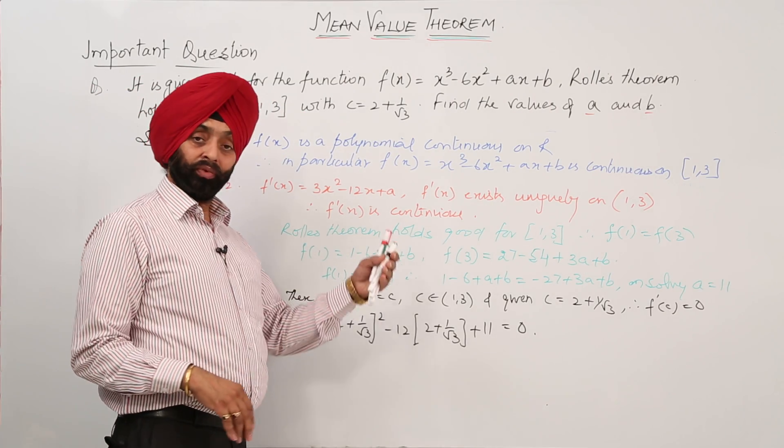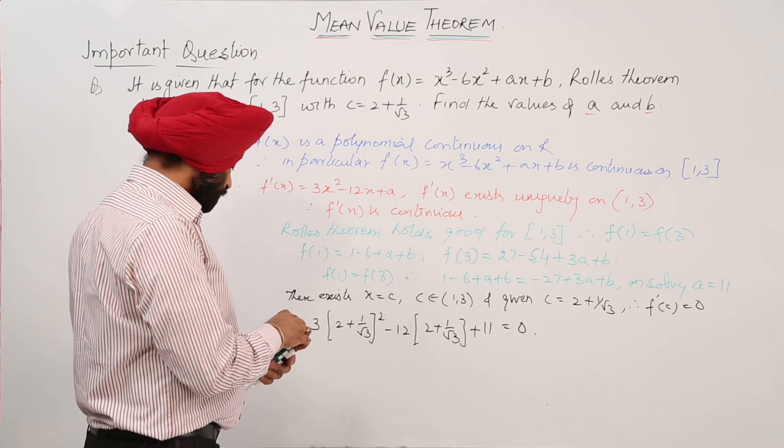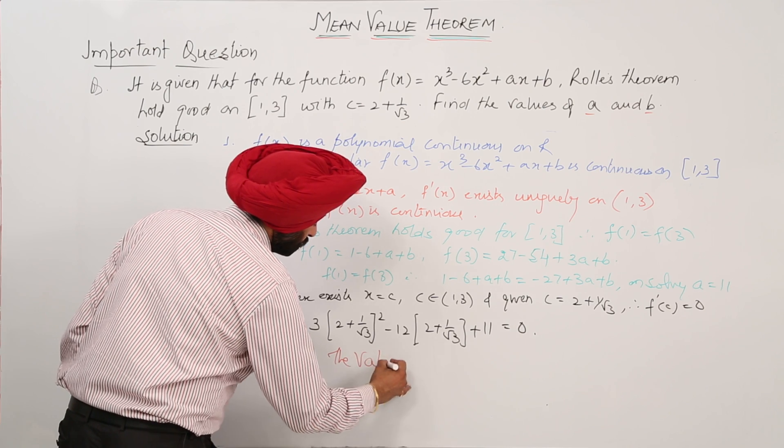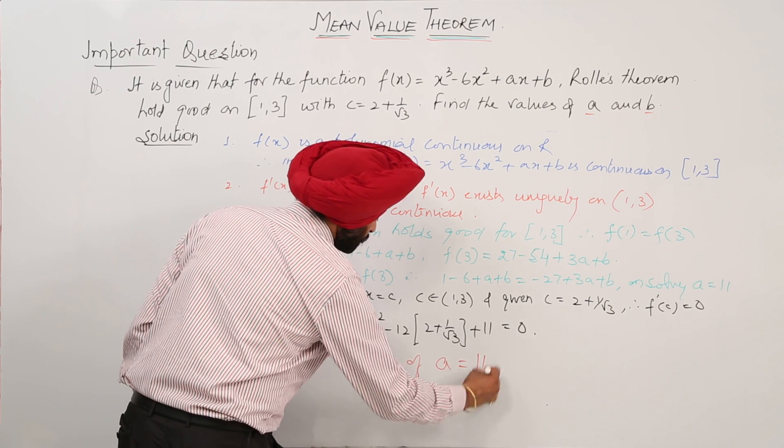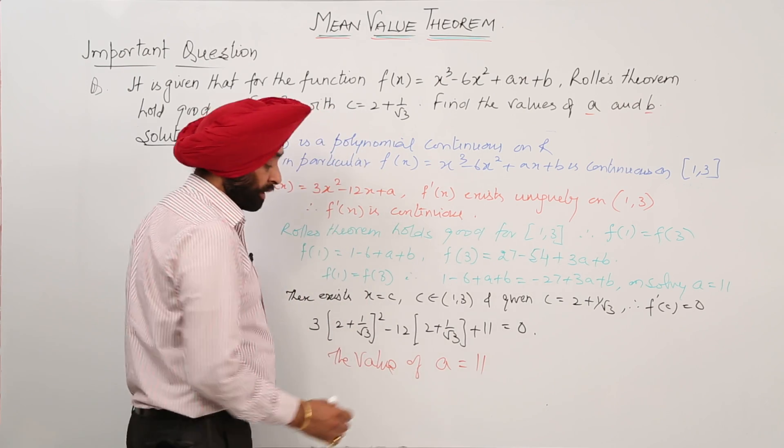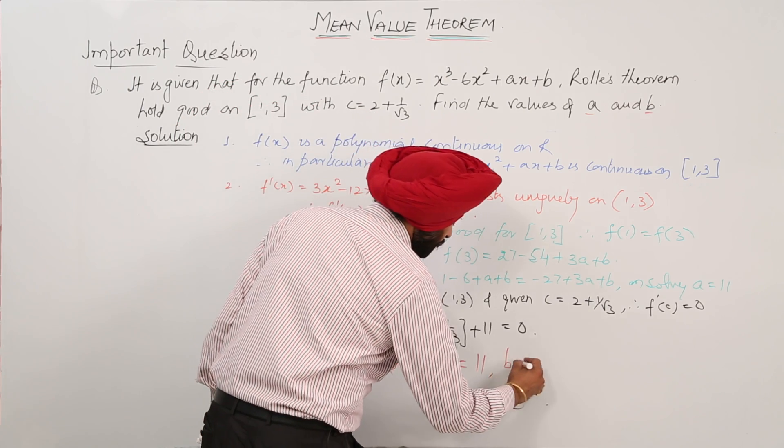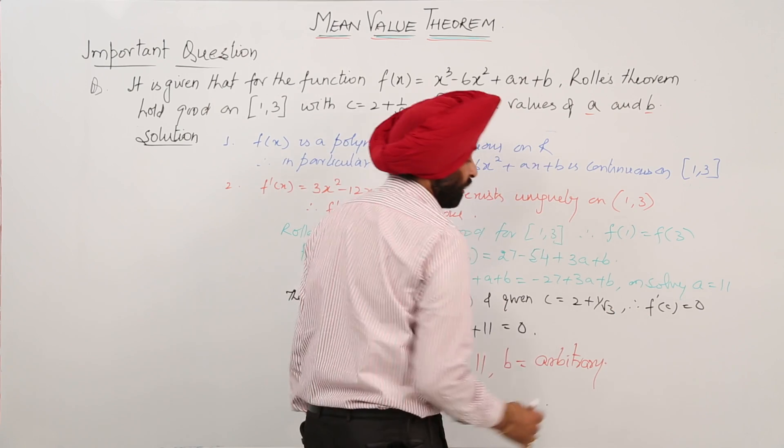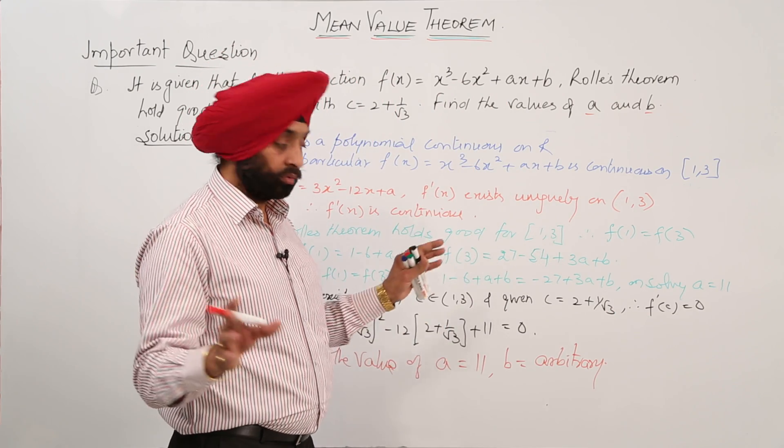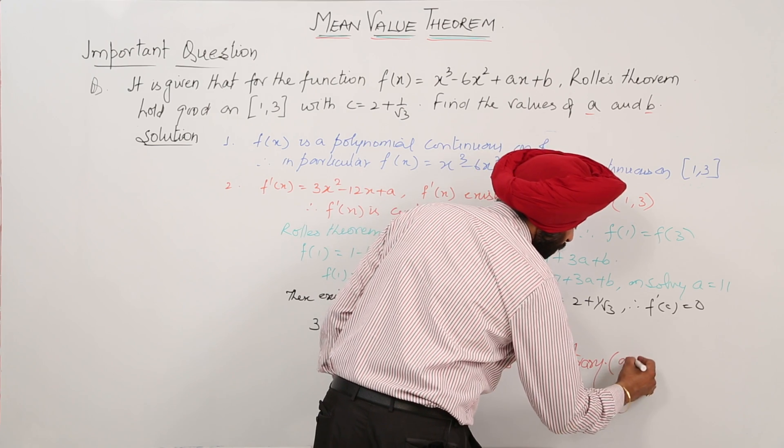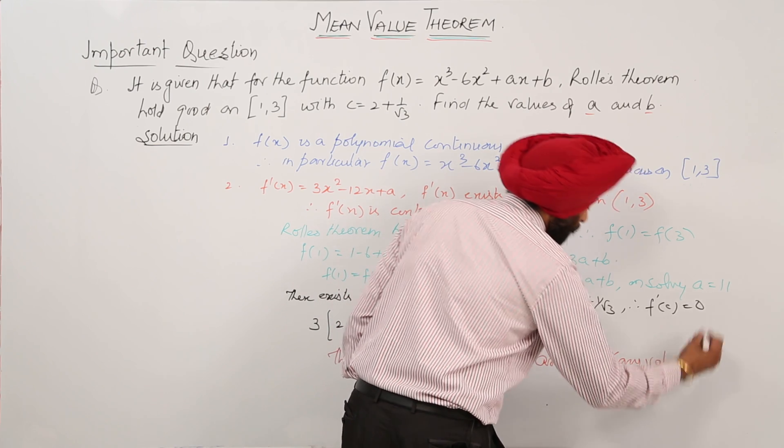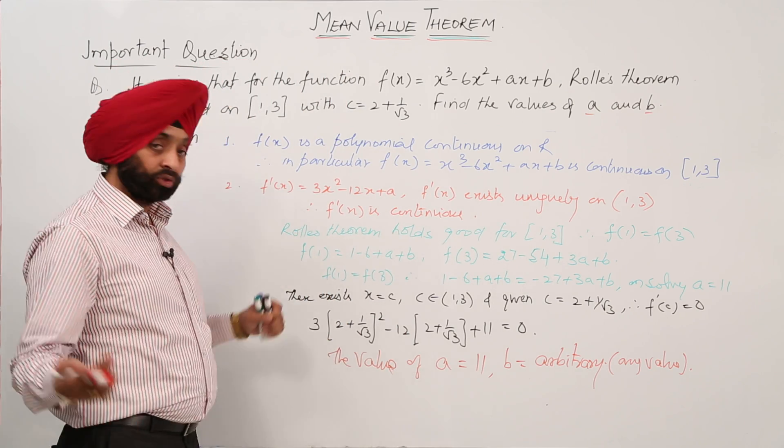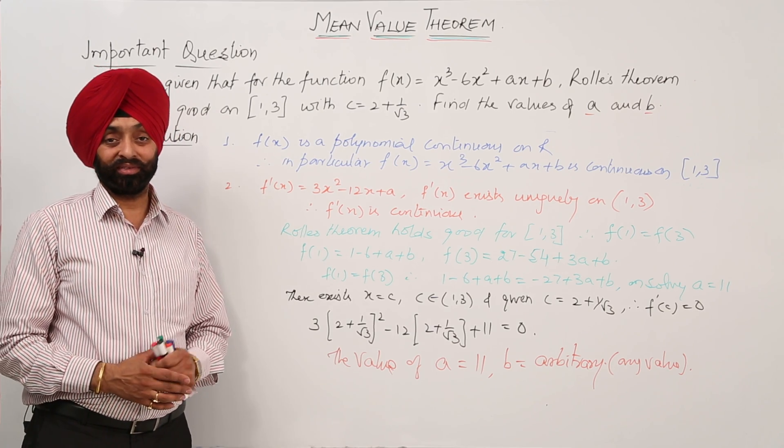Now when you are verifying this, this will be equal to 0. So the value of a = 11, and b equals arbitrary value. It means for b we can take any value, or you can write any value. For any value of b, Rolle's theorem will definitely exist uniquely. So this is the solution.